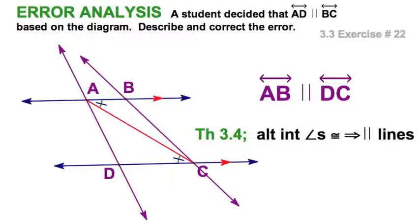You're going to see this diagram a lot in your proofs. You've got to pay attention to the tick marks. Only the blue lines are parallel here.